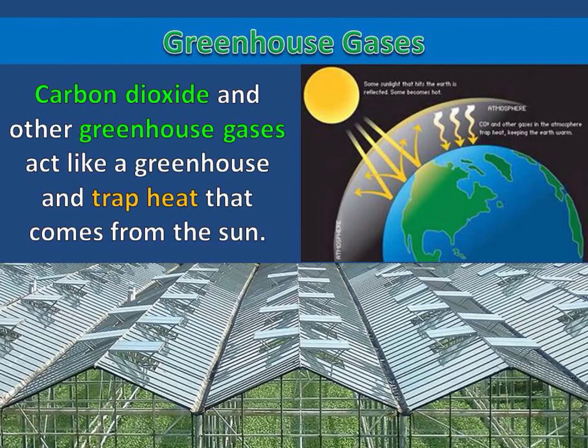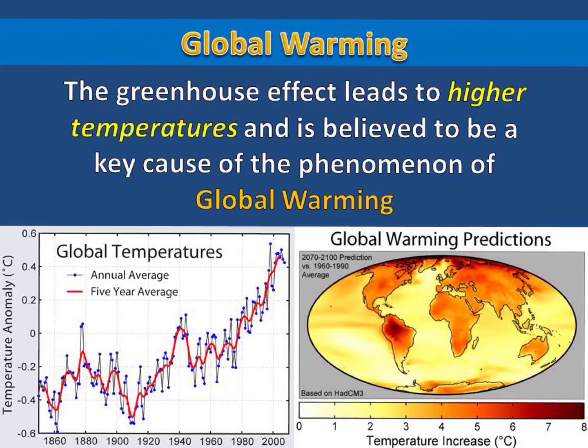Carbon dioxide and other greenhouse gases act like a greenhouse and trap heat that comes from the sun. The greenhouse effect leads to higher temperatures and is believed to be a key cause of the phenomenon of global warming.